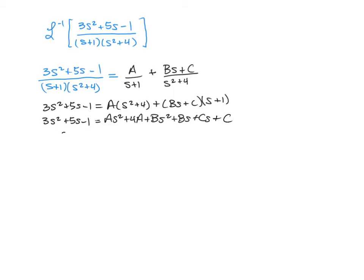And now when we match coefficients, this is going to give us a linear system. Matching the squares, we've got 3 is equal to A plus B. Matching the s's, we've got 5 is equal to B plus C.